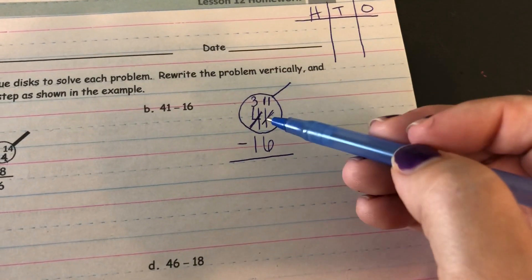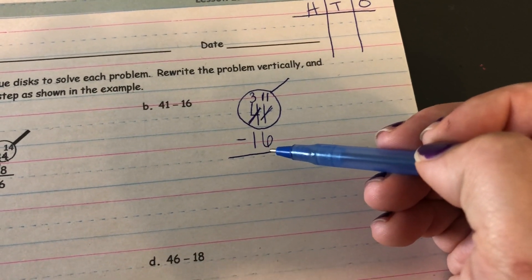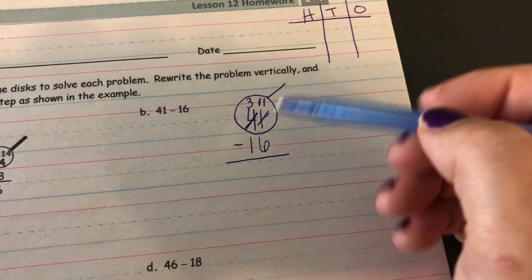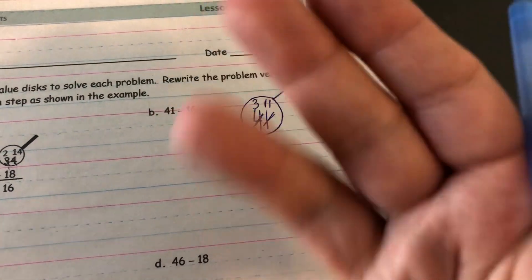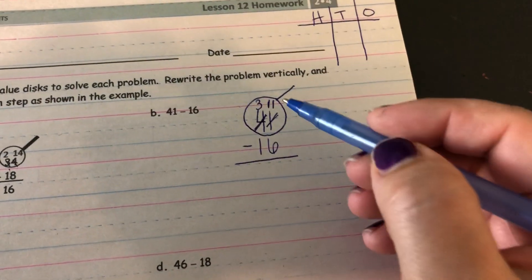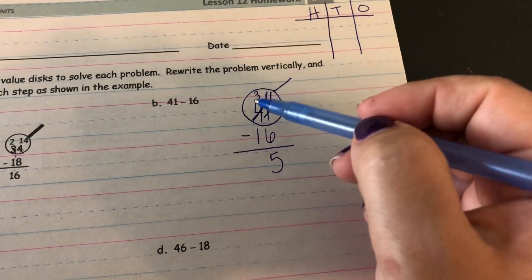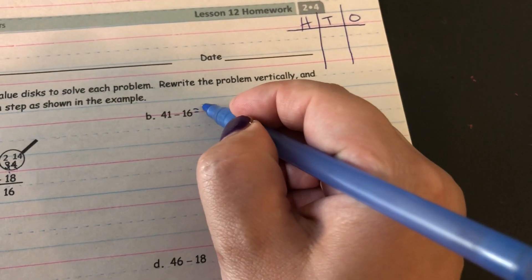Now, looking closely, if I have 11 ones, can I take away six? Yes, I can. And I'm going to use counting to subtract. So if I've got 6, 7, 8, 9, 10, 11. So 11 minus 6 gives me 5. And 3 minus 1 gives me 2 for an answer of 25.